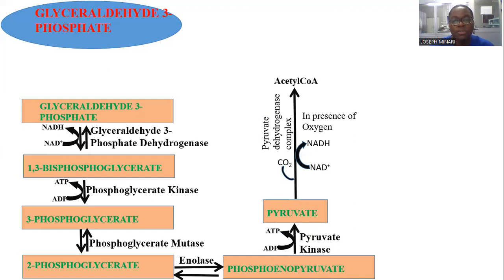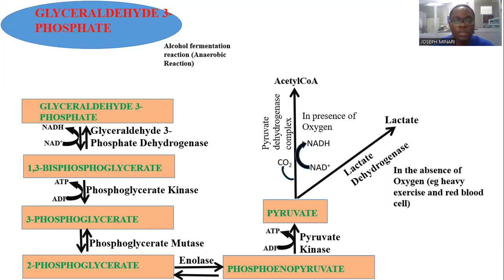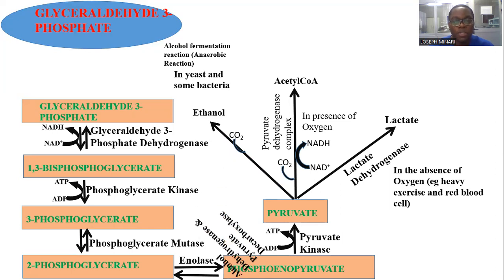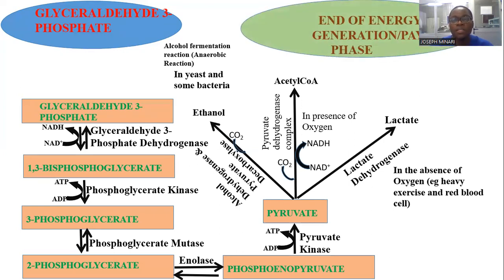Pyruvate dehydrogenase complex enhances conversion of pyruvate into acetyl-CoA, which continues in the reaction. In the absence of oxygen — for example in heavily exercising muscles or red blood cells — pyruvate is converted to lactate in the presence of lactate dehydrogenase. We also have alcohol fermentation in the absence of oxygen, which happens in yeast and some bacteria, where carbon dioxide is released and ethanol is formed in the presence of pyruvate decarboxylase and alcohol dehydrogenase.